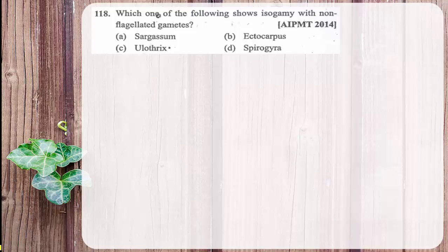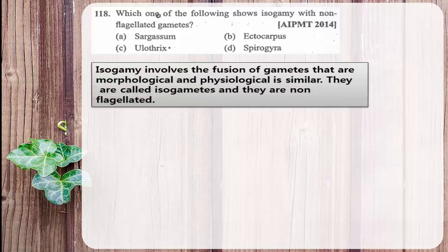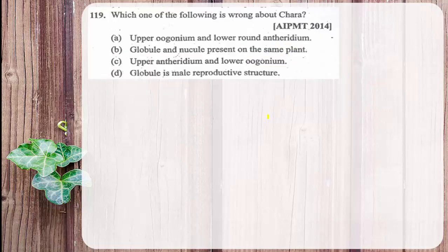Which one of the following shows isogamy with non-flagellated gametes? Isogamy is sexual reproduction where morphologically similar gametes fuse. Non-flagellated isogamy is found in Spirogyra, where gametes are non-motile, of the same type, and the process is called conjugation. The right answer is Spirogyra.